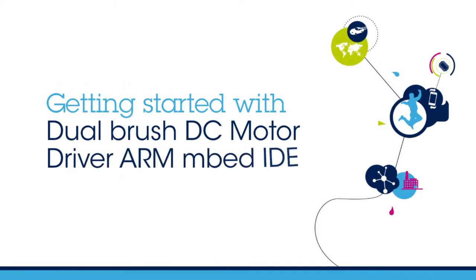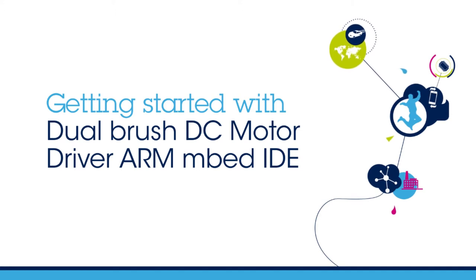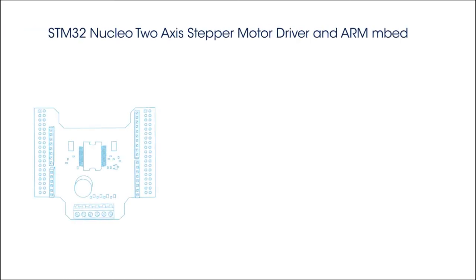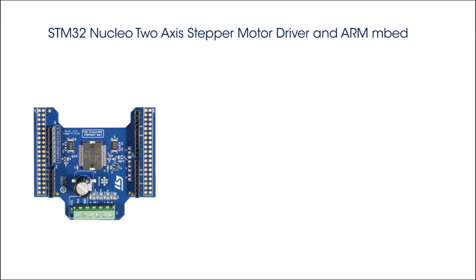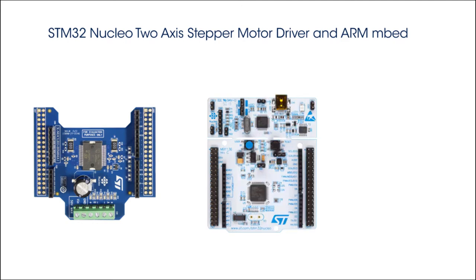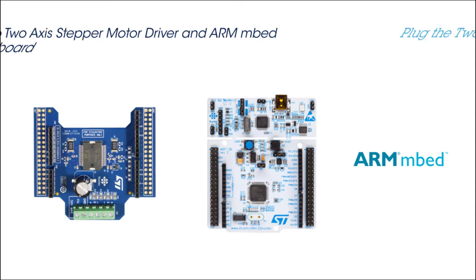Welcome to this explainer video on the SDM32 Nucleo Motor Control Expansion Board using Arm Embed Environment. This expansion board enables you to drive two bipolar DC or four unipolar DC motors. During this video, we will show you how to drive four unipolar unidirectional DC motors. We are going to explain how to get your application running in the Arm Embed Environment. The first half of the video will focus on the software setup and the second half will detail the hardware functionality available.